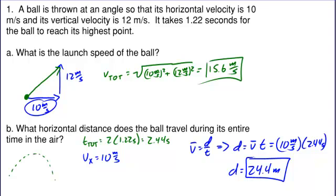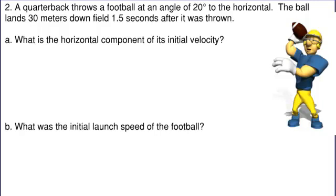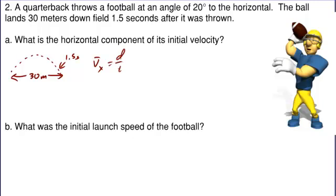Let's look at another problem. A quarterback is throwing a football downfield at an angle of 20 degrees to the horizontal. The ball lands 30 meters downfield 1.5 seconds after it was thrown. What's the horizontal component of its velocity? To find the horizontal component, let's start with a diagram. The ball had a horizontal displacement of 30 meters and did this in a time of 1.5 seconds. So the average horizontal velocity must be displacement over time, or 30 meters over 1.5 seconds, which is 20 meters per second.